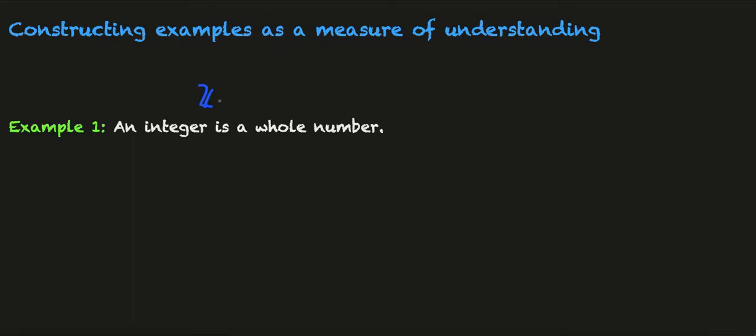What we want to do to test our understanding is construct examples and non-examples of integers. If we can do this then that's some indication that we know something about them. If we can't do that then that's an indication that we don't know something about the integers.